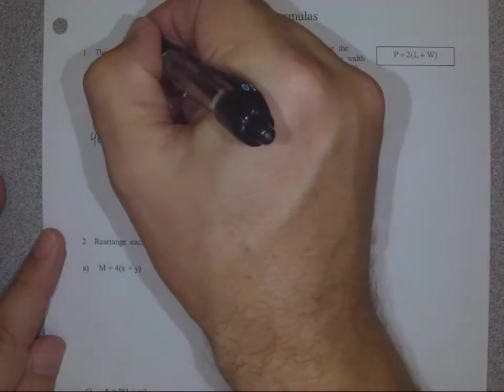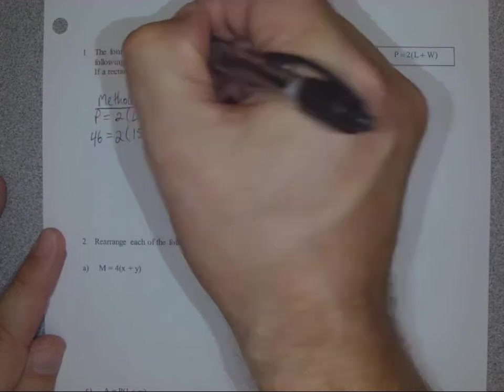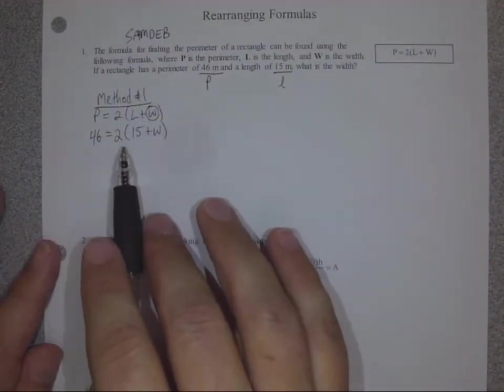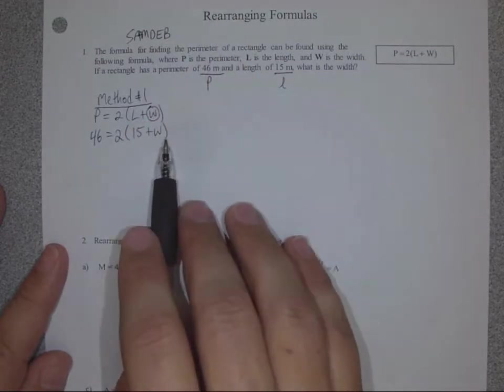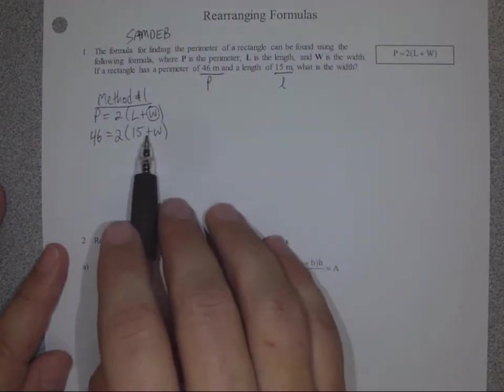Now up here, I'm going to remind you all that we're going to be using SAMDEB to help us figure out which operations to undo first. So it looks like in SAMDEB, brackets actually are last in the order of operations. So we don't want to touch this bracket yet. We want to do that last. Even though there's an addition inside, an addition comes first.